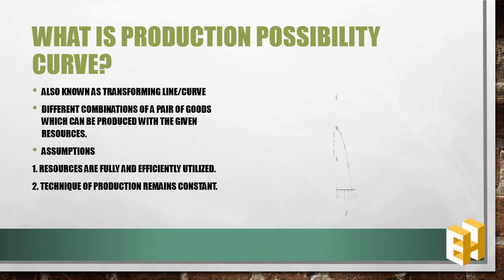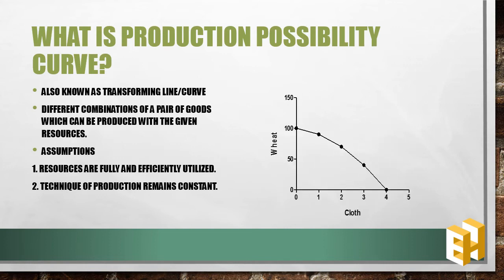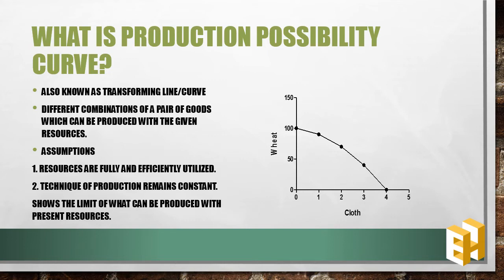Overall, the production possibility curve tells us the maximum production which can take place with the given resources, and it looks like a concave downward sloping curve.